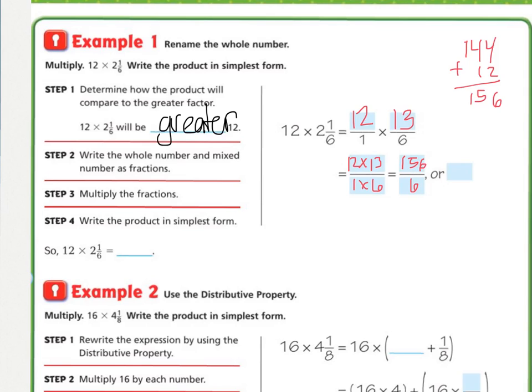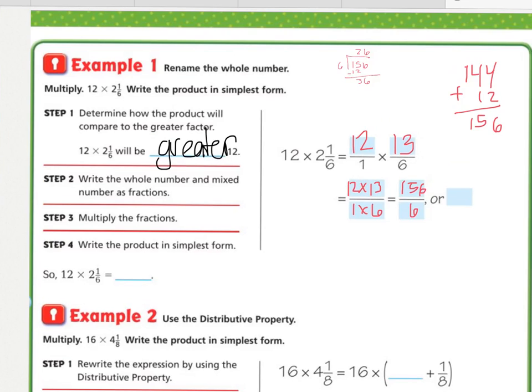So now we need to simplify. Remember, fractions are another way to write division problems. So we could solve that just by doing a division problem of 156 divided by six. So right here I did my little division problem. I did 156 divided by six, and I found that it goes in there 26 times with no remainders. So 12 times two and one-sixth is 26, and it makes sense because we need two more than 12 plus a little bit more. So 26 is just a little bit more than 12 times two.